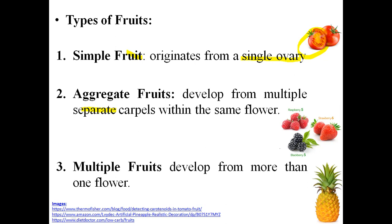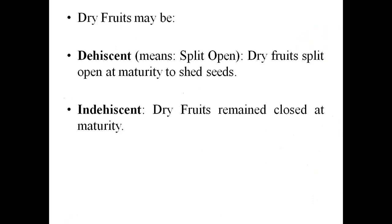Berries are examples of aggregate fruits. Multiple fruits develop from more than one flower — for example, pineapple. Dry fruits may have two types: one type is known as dehiscent, and the other is indehiscent.